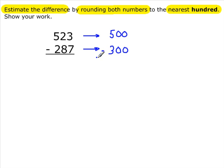And then we'll subtract. This is much easier to do, isn't it, than the original problem. So this estimate we can do quickly in our head. 500 minus 300 is 200.